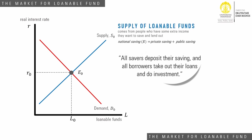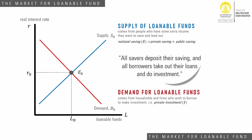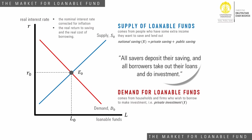Investment from both firms and households is the source of the demand for loanable funds. Another element in the market is the real interest rate — the nominal interest rate corrected for inflation — which is both the real return to saving and the real cost of borrowing. Real interest rate represents the real return to saving, so it is the incentive for savers. The higher the interest rate, the more willing savers are to save. With this positive correlation, the supply curve is an upward-sloping curve.